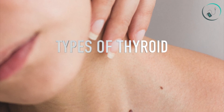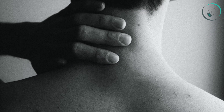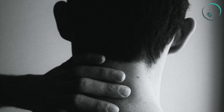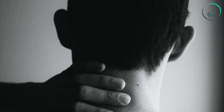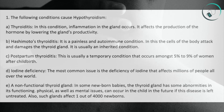Types of thyroid disease: Hypothyroidism and hyperthyroidism are the two main types of thyroid disease. The following conditions cause hypothyroidism. A. Thyroiditis: In this condition, inflammation in the gland occurs. It affects the production of the hormone by lowering the gland's productivity.